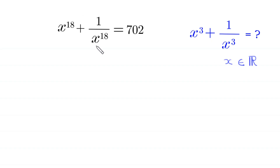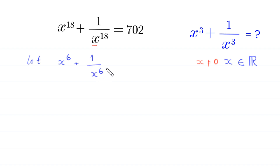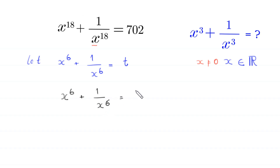Since x is in the denominator, x cannot be equal to 0. Now, we suppose that x to the power 6 plus 1 over x to the power 6 is equal to t. We take a cube of both sides of this equation: x to the power 6 plus 1 over x to the power 6 is equal to t.